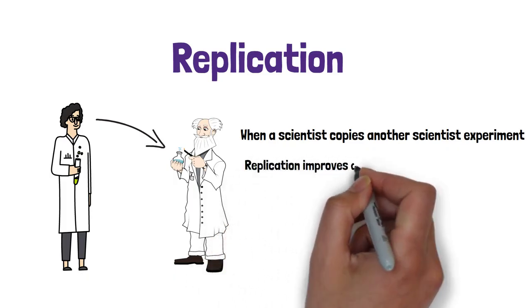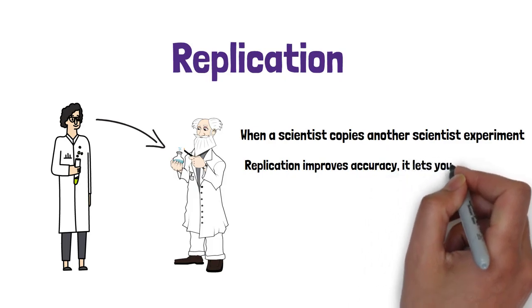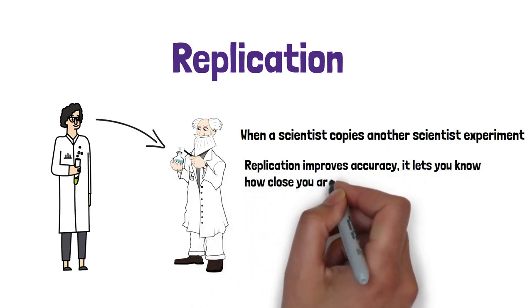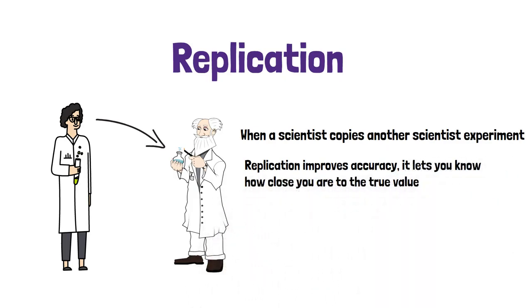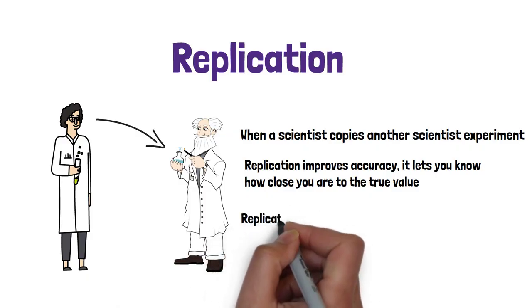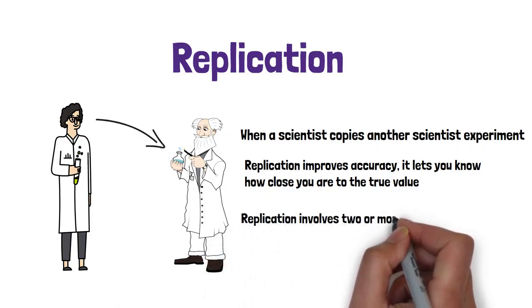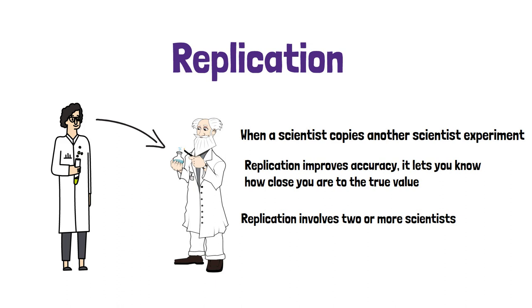Replication improves accuracy. It lets you know how close you are to the true value. Remember, replication involves two or more scientists where scientists are copying experiments from other scientists.